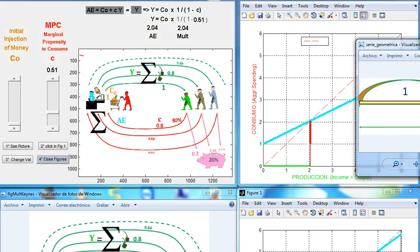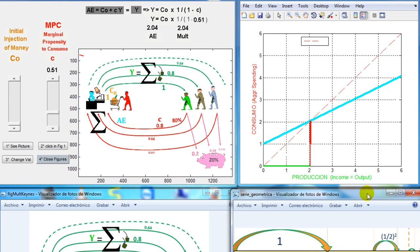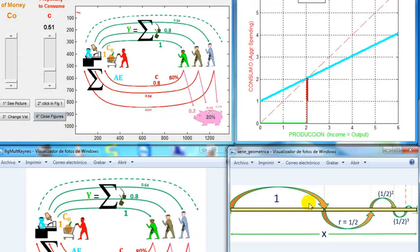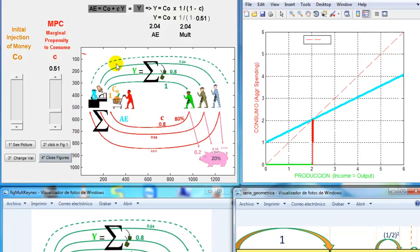When the marginal propensity to consume is 0.5, then the multiplier is 2, which is intuitive. So here we see that C is a little bit more than half, so the multiplier is a little bit more than 2. So we have this initial injection, and then we duplicate, multiply by 2, the initial injection.